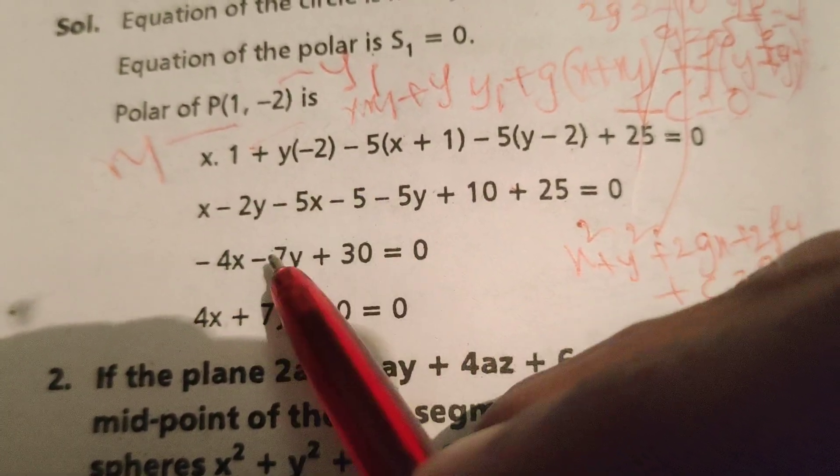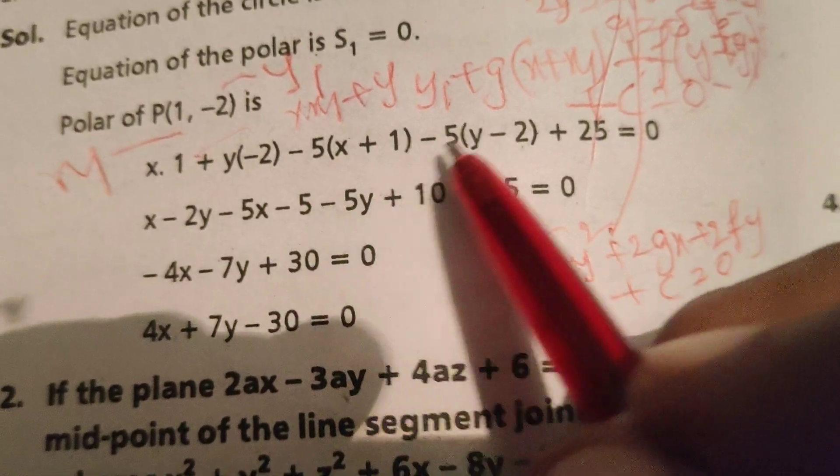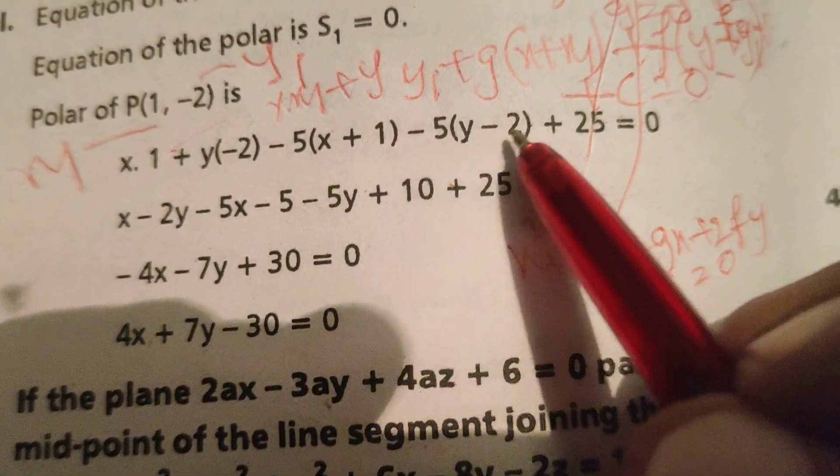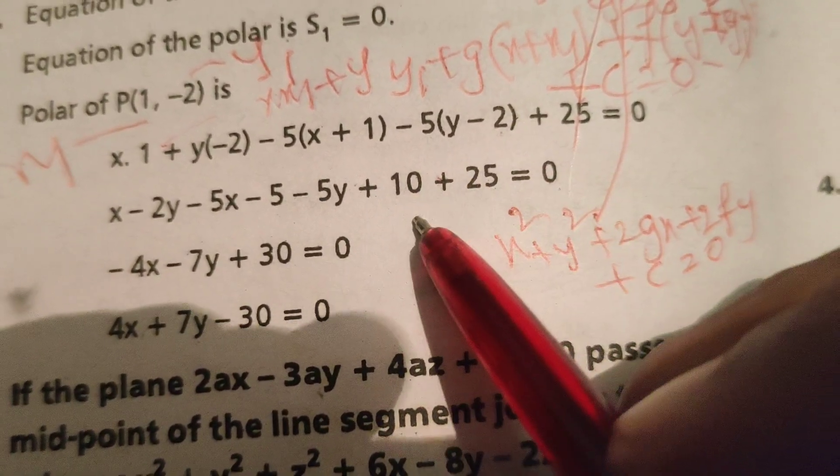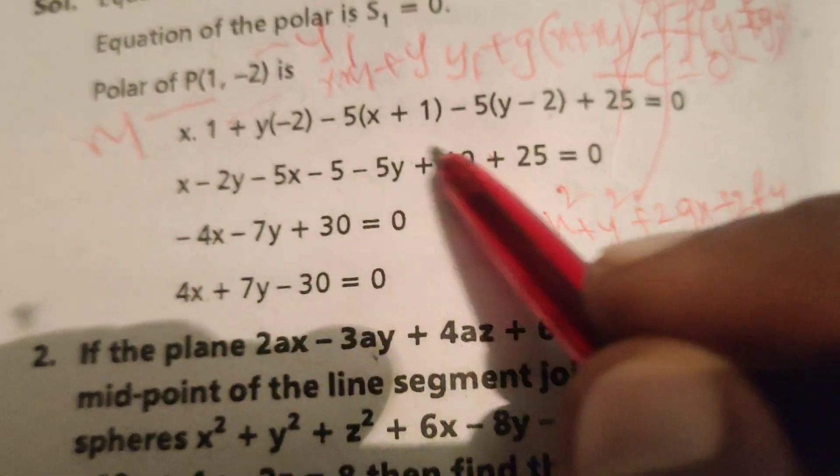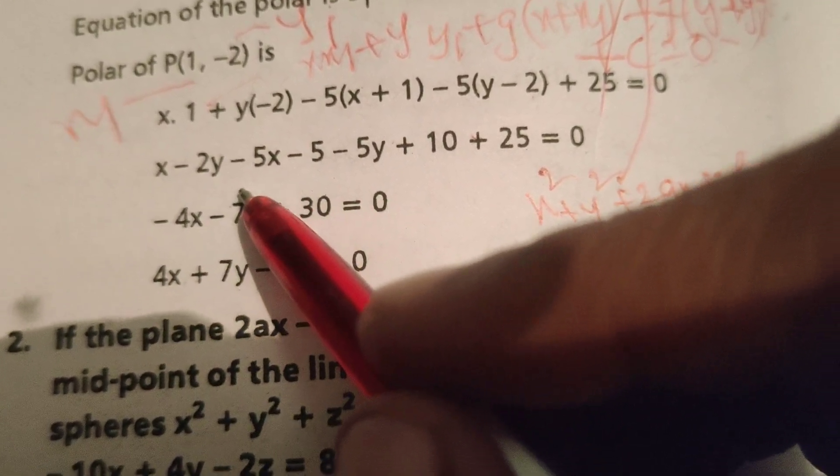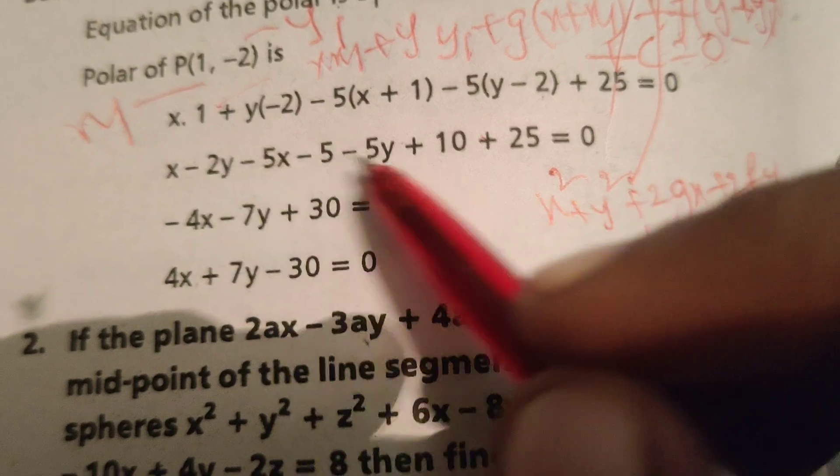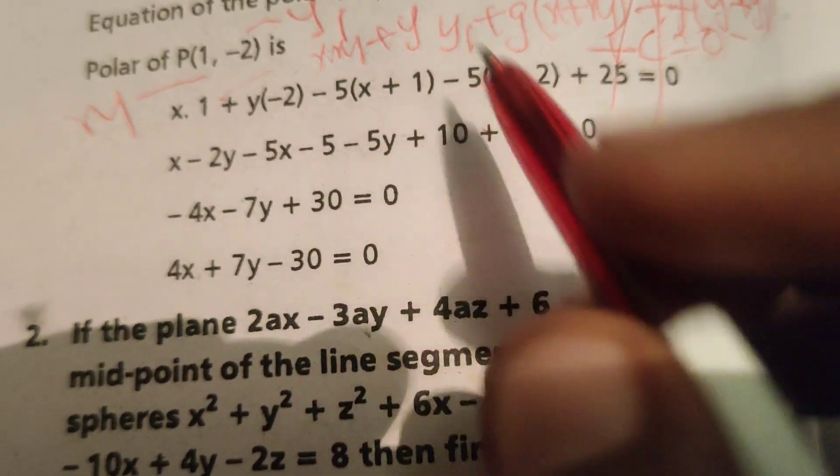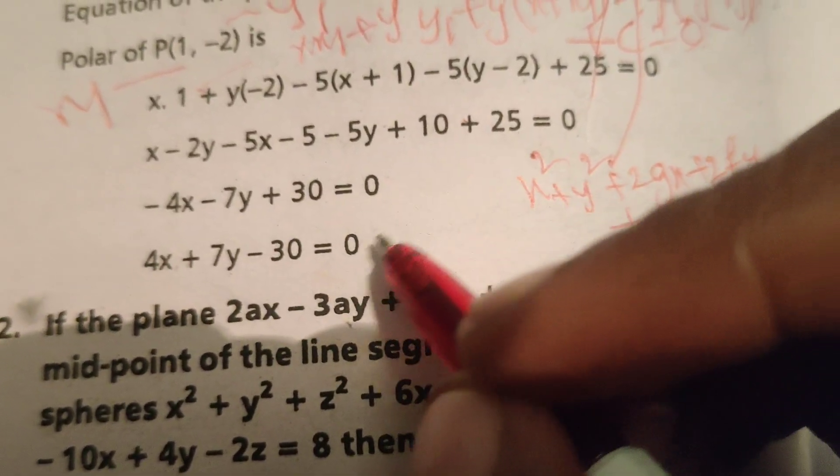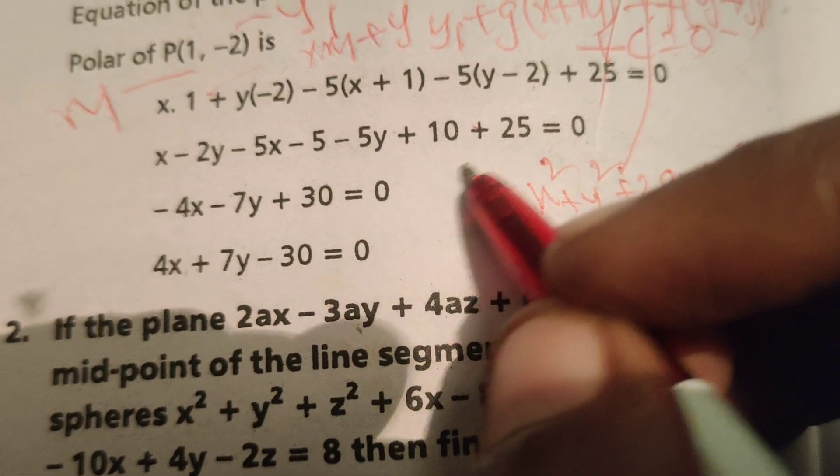Simplifying by combining like terms: x - 5x gives -4x, -2y - 5y gives -7y, and -5 + 10 + 25 gives 30, so we have -4x - 7y + 30 = 0.